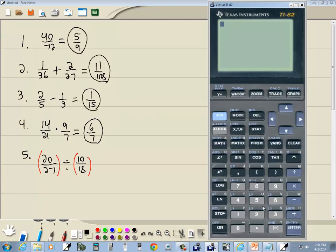So, press clear to clear that. I'm going to do a beginning parentheses, 20 divided by 27, closing parentheses divided by beginning parentheses, 10 divided by 18, and close parentheses. Again, I put parentheses around the first fraction, parentheses around the second fraction, and divide in between them.